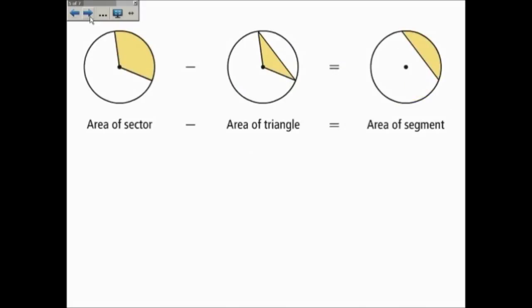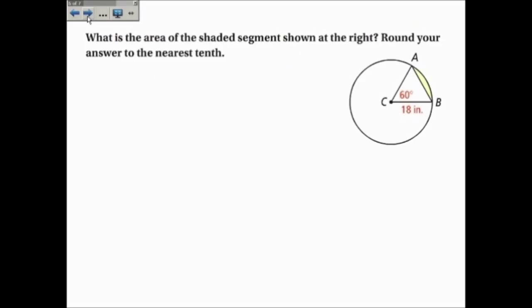So if you take the area of a sector, and you subtract the area of a triangle, which we can find of base times height, then we'll find the area of this segment, just so you can see it all in one picture. If I take this sector, and this is the segment, I can find this area using one-half base times height. And if I subtract that away, I'm left with just this part, which is the area of a segment.